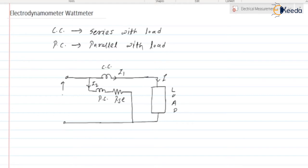The supply voltage is V. The actual power consumed by the load is V multiplied by I multiplied by cosine of the angle between V and I — that is, V·I·cos φ.